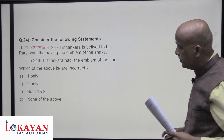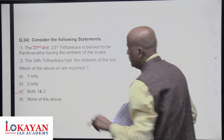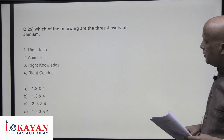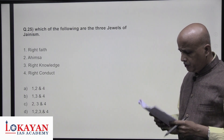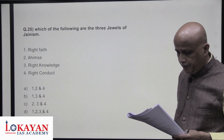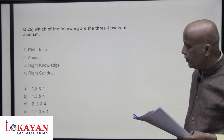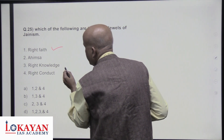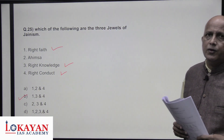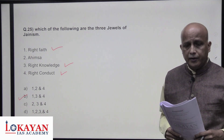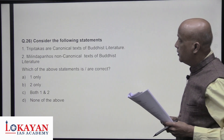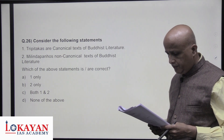The Three Jewels (Ratnatraya) of Jainism are Samyak Darshana, Samyak Jnana, and Samyak Charitra — these are the main ideas. Ahimsa, though popularly associated, is not technically one of the three jewels — it is part of the code of conduct. One, three, and four are correct.